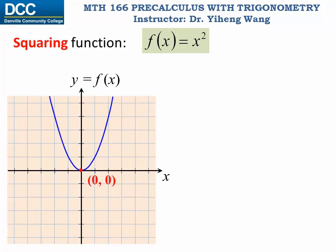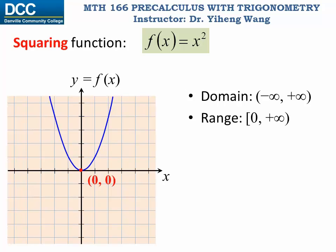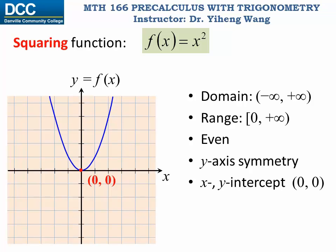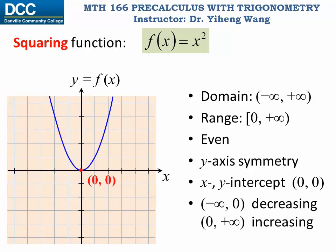Next we have the squaring function f(x) equals x squared, which is the parent function for the quadratic function family. The domain includes all real numbers, but because x squared cannot be negative, the range only starts from 0 to positive infinity. It is an even function because it is symmetric about the y-axis. It has the same x and y-intercept, (0, 0), the origin. As you can see from the graph, this function decreases on the interval from negative infinity to 0, and increases on the interval from 0 to positive infinity.